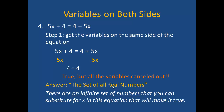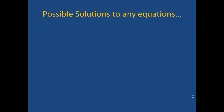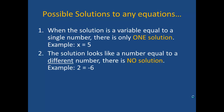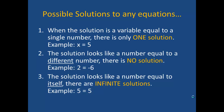You should have copied all of the notes on this topic into your notebook. When solving equations, there are several possible solutions. The first situation is when the solution is a variable equal to a single number — meaning there is only one solution, such as x equals 5. Sometimes when you simplify, the solution looks like a number equal to a different number, such as 2 equals negative 6 — this means there is no solution. It's also possible the solution looks like a number equal to itself, such as 5 equals 5 — this means there are infinite solutions. Please copy these possible solutions into your notebook.